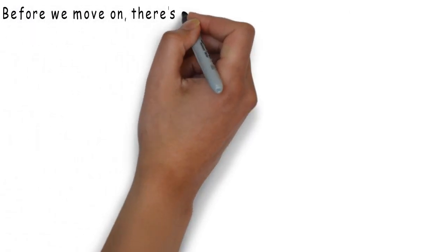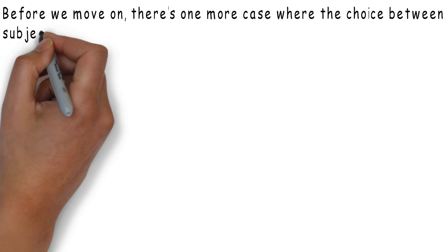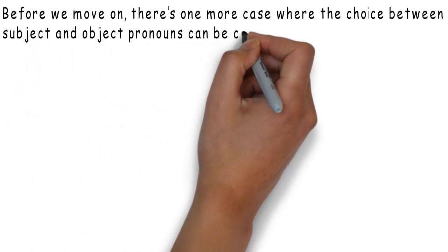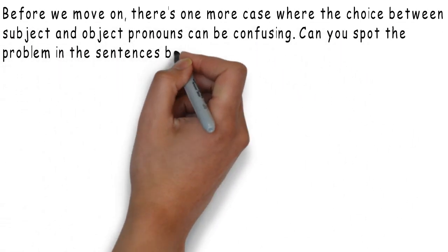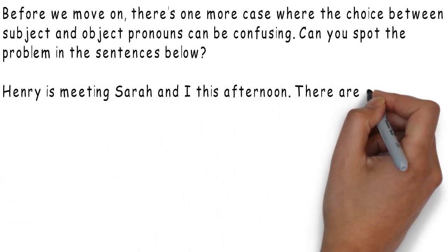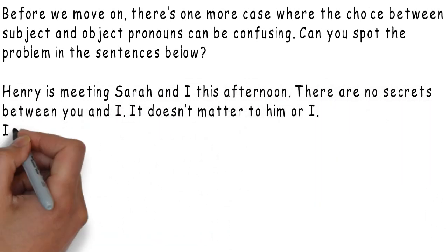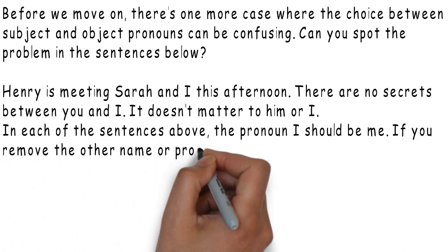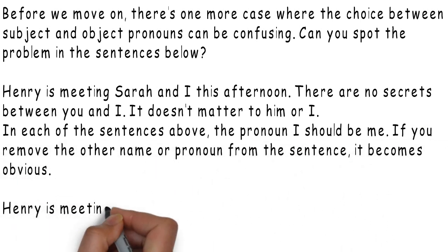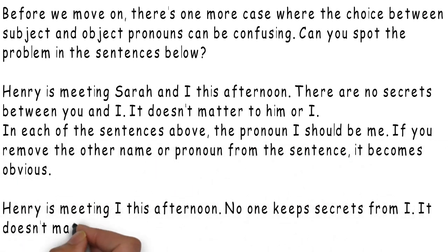Before we move on, there's one more case where the choice between subject and object pronouns can be confusing. Can you spot the problem in these sentences? 'Henry is meeting Sarah and I this afternoon.' 'There are no secrets between you and I.' 'It doesn't matter to him or I.' In each of these sentences, the pronoun I should be me. If you remove the other name or pronoun from the sentence, it becomes obvious: 'Henry is meeting I this afternoon' — no. 'No one keeps secrets from I.' 'It doesn't matter to I.'